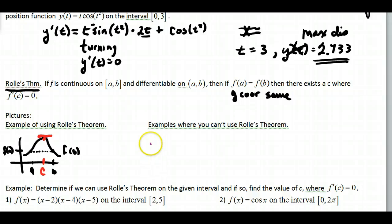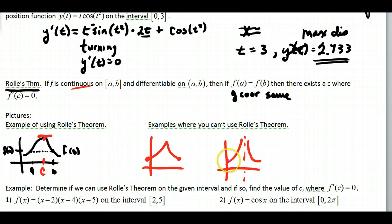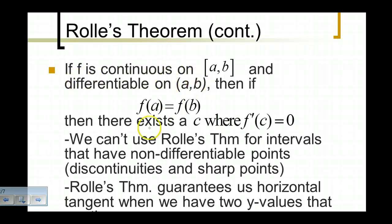Examples where you can't use Rolle's Theorem: if it doesn't satisfy the conditions, you're no good. If it's not differentiable — say f(a) and f(b) are the same but the function is not differentiable — you will never have a slope of 0. Another case: if it's not continuous. For instance, a function with a vertical asymptote could have two values that are the same, but there's no smooth connection, so there's no slope of 0 ever. We can't use Rolle's Theorem for intervals that have non-differentiable points, which are discontinuities and sharp points.